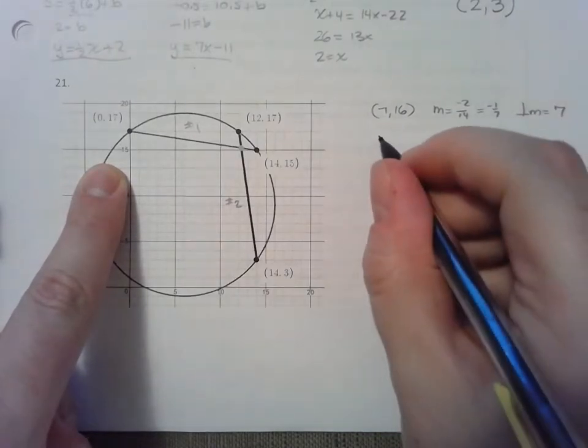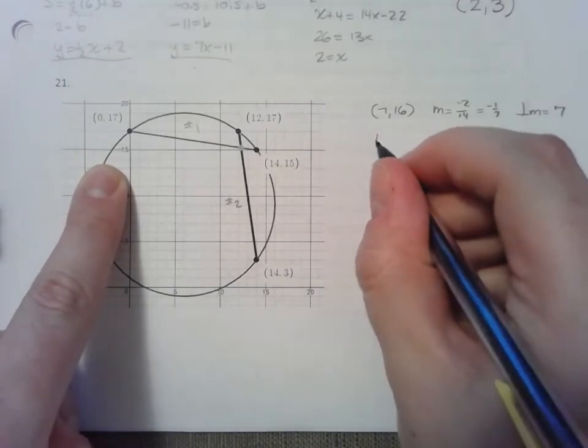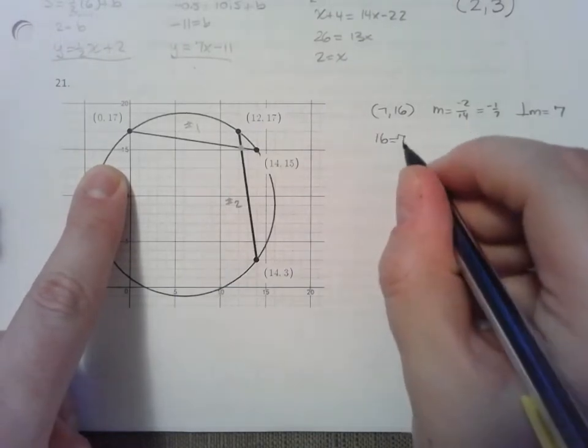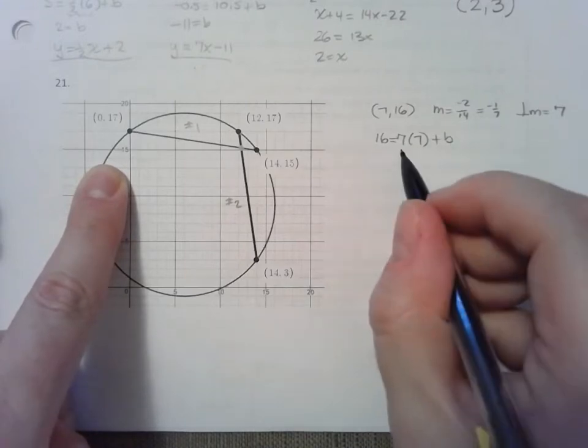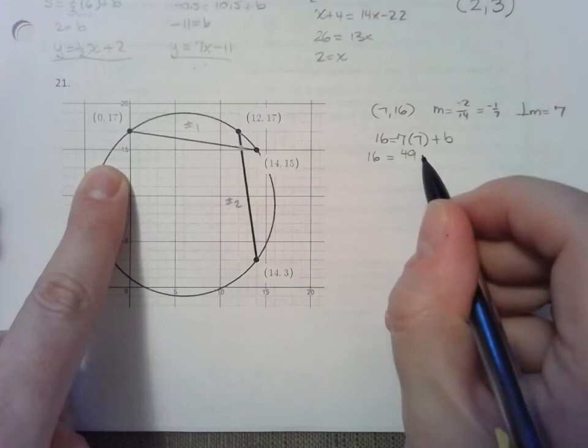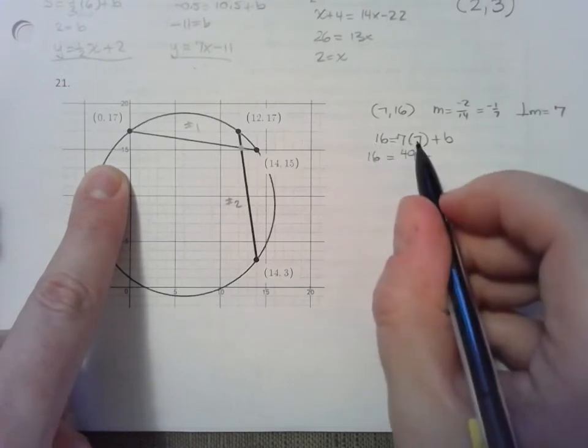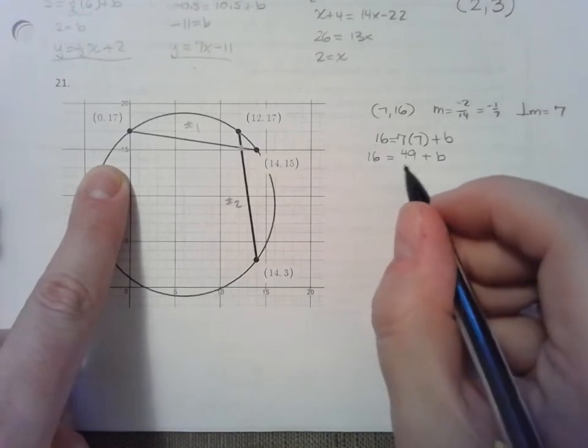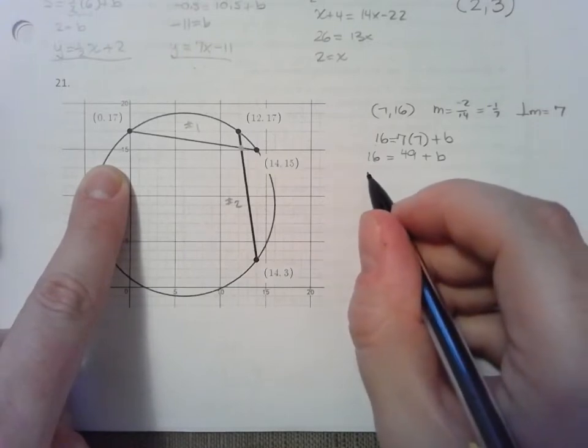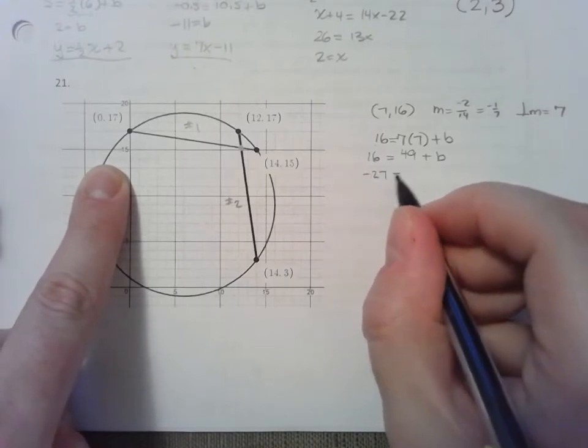So if I do slope-intercept form, y equals mx plus b. Find the y-intercept. Given the y-coordinate, the slope, and the x-coordinate. Subtract 49 from both sides. Looks like negative 27 equals b.